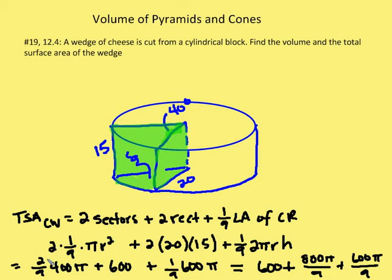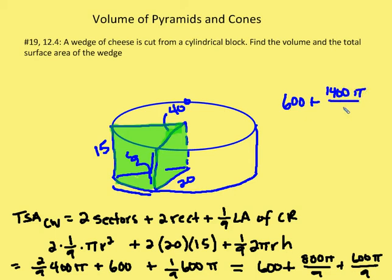Plugging in values: two-ninths times 400 pi for the two sectors, plus two times 20 times 15 (which is 600) for the two rectangles, plus one-ninth of the circumference — one-ninth of 2 pi r — times the height of 15, giving one-ninth of 600 pi. That equates to 600 plus 800 pi over 9 plus 600 pi over 9. The final answer is 600 plus 1,400 pi over 9.